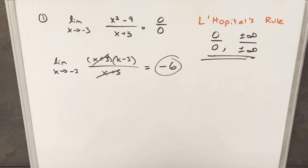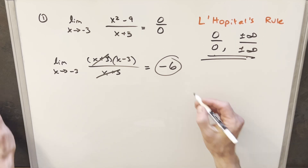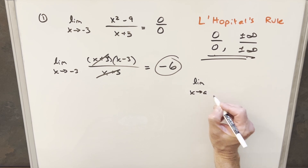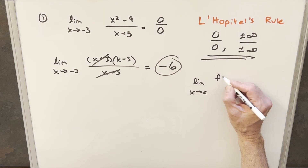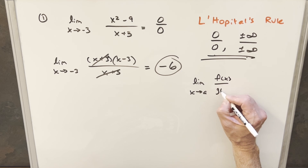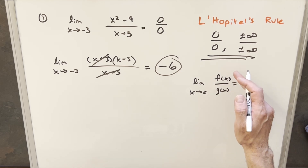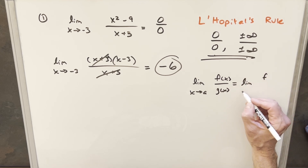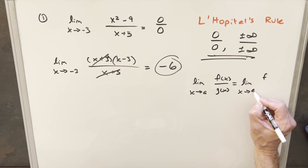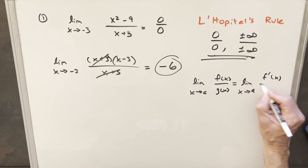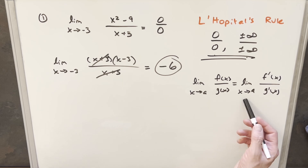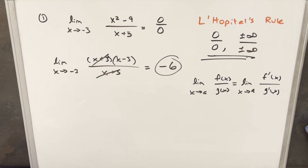Now let's go back and do this using L'Hôpital's Rule. The rule says that for a limit as x approaches a of f(x) over g(x), if it's an indeterminate form, we can find the limit by taking the derivative of f(x) over the derivative of g(x). So for our problem, we take the derivative of the numerator x squared minus 9, which gives 2x, and the derivative of the denominator x plus 3, which is just 1.